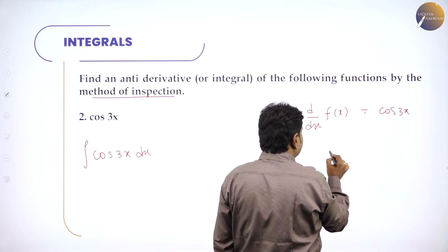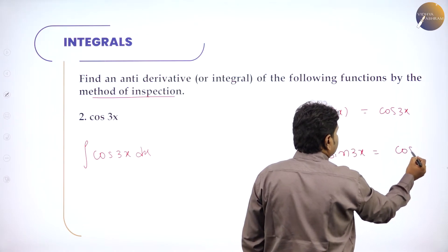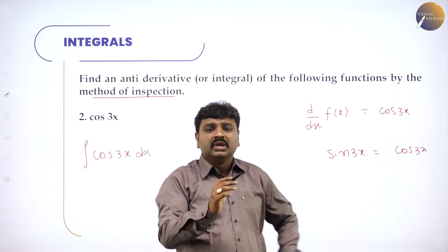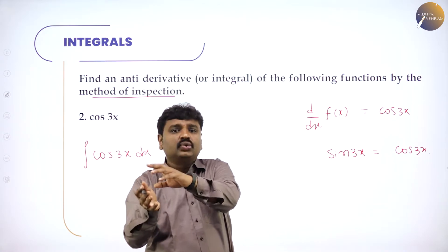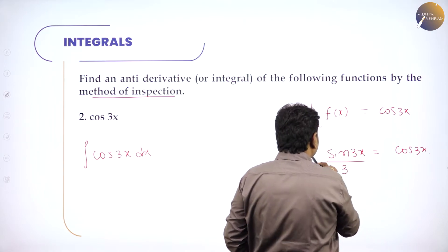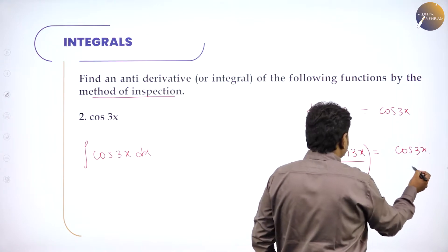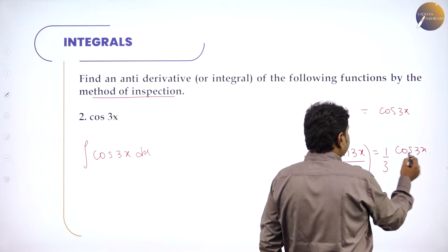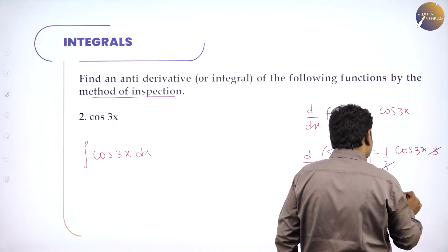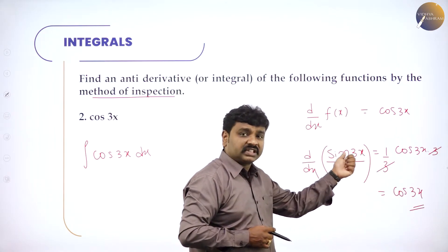If I want cos, I should differentiate sin. So I try sin 3x. What is the derivative of sin 3x? By chain rule: cos 3x into d/dx of 3x gives cos 3x into 3. I don't want that factor of 3, so I divide by 3. Now d/dx of sin 3x by 3: take 1/3 out as constant, derivative of sin 3x is cos 3x into d/dx of 3x which is 3, and the 3s cancel, giving cos 3x. So by inspection, if I want cos 3x I should differentiate sin 3x by 3.